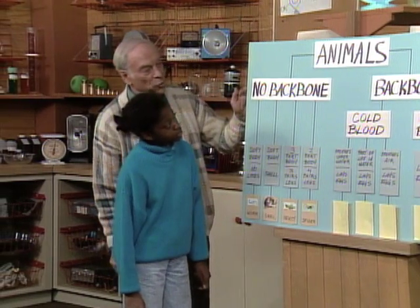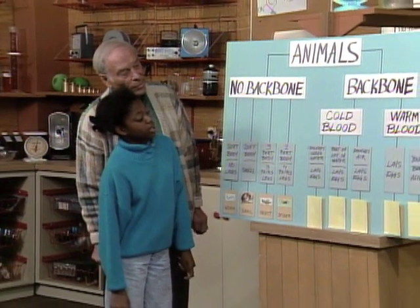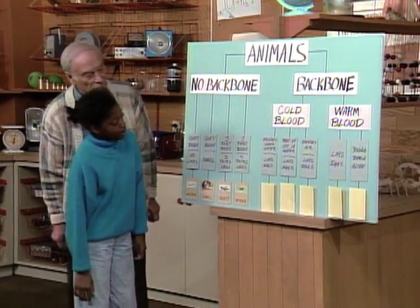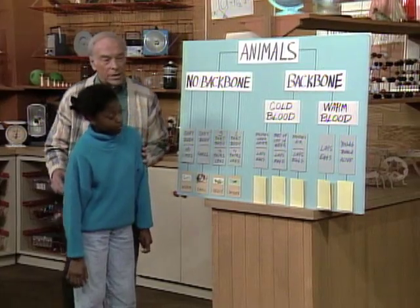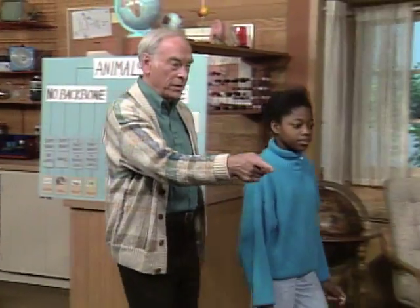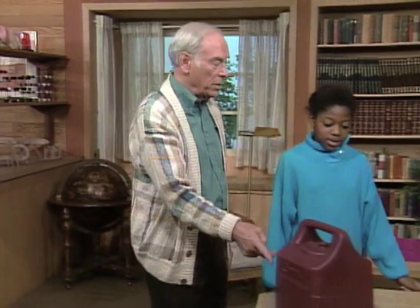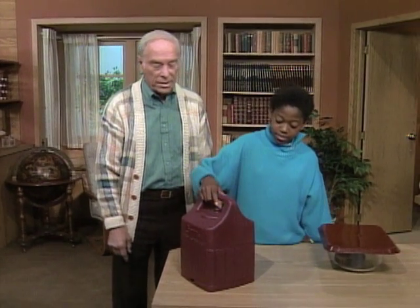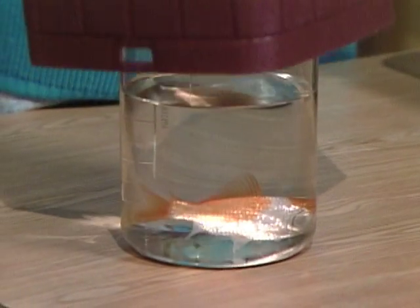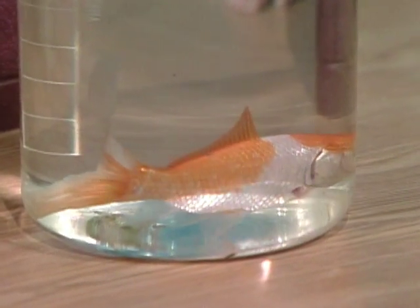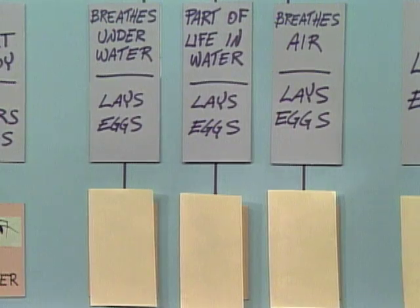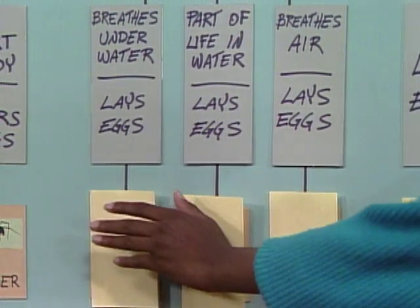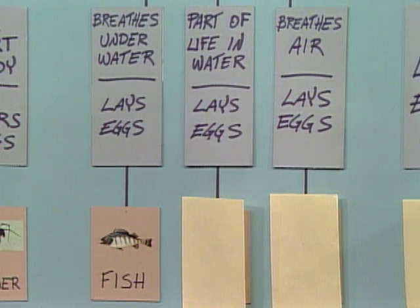Okay, now we're switching from no backbone to backbone — cold blood and warm blood. First, in the cold-blooded column: it breathes underwater and lays eggs. And the animal that does that is over here underneath this thing right here. What could it be? It could be a fish. Slowly, carefully. You're correct. What kind of fish is it? It's a goldfish. Backbone, cold blood, breathes underwater, and lays eggs — a fish. Very good.